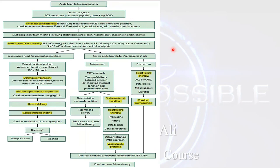If you confirm the diagnosis of peripartum cardiomyopathy, management includes: starting antenatal corticosteroids for fetal lung maturity and considering multidisciplinary team management involving the obstetrician, cardiologist, neonatologist, anesthetist, and intensivist, since management will mainly be in the HDU. You then need to assess the severity of heart failure based on blood pressure, heart rate, respiratory rate, and oxygen saturation.